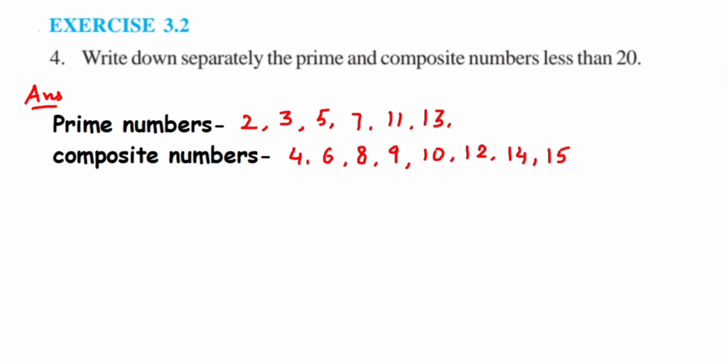Then sixteen is again a composite number. Seventeen is a prime number. Then comes eighteen. Eighteen is composite. Nineteen is a prime number. And last, twenty. Twenty, which we are not including. If you want to include it, it will be a composite number. Since they're saying less than twenty, we are not including the number twenty here.